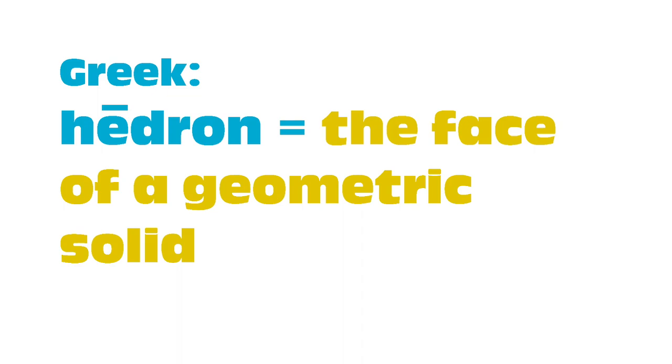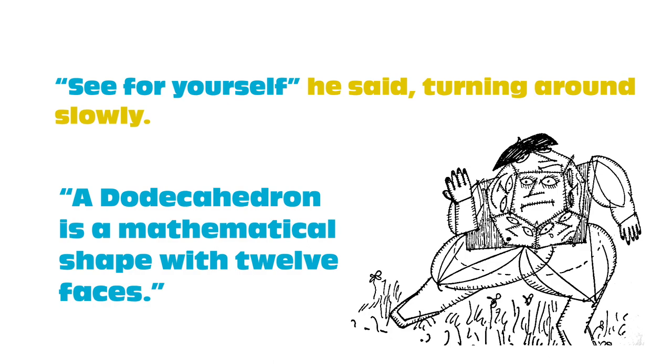The dodecahedron defines himself as a mathematical shape with twelve faces. Well, in geometry a face is another way to say a surface or side. But of course, our friend here doesn't just have twelve sides. He has twelve actual faces that can make twelve different expressions.